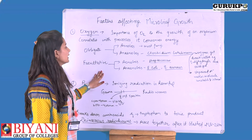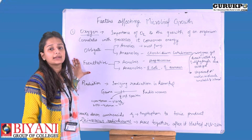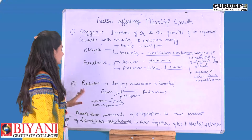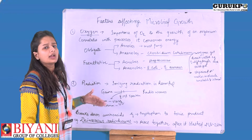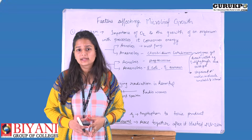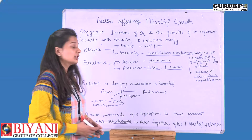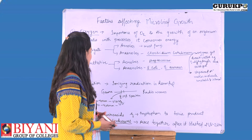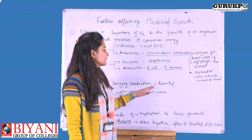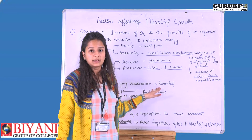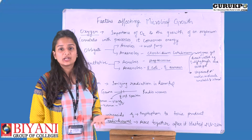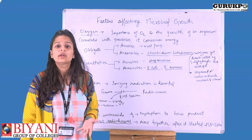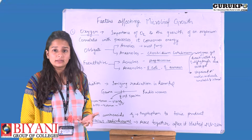We have now completed the oxygen factor. The next and last factor is radiation. Radiation also affects microorganisms. Mostly it is ionizing radiation — that is, radiation produced after ionization of any material — that is harmful for organisms.